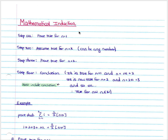When we look at mathematical induction there are four steps that you will follow in every single question. Step one: prove it true for n equals 1. Step two: assume that it's true for n equals k, or any variable you assign. Step three: prove it true for n equals k plus 1. Step four is your conclusion, where you conclude that if it's true for n equals 1 and n equals 2 and so on, therefore it's true for all n values.